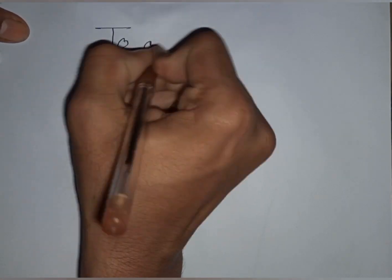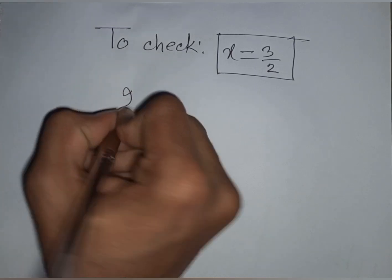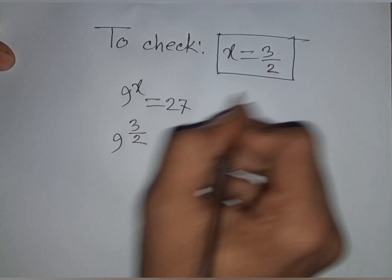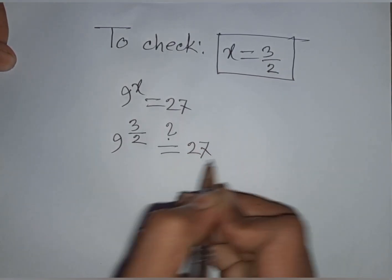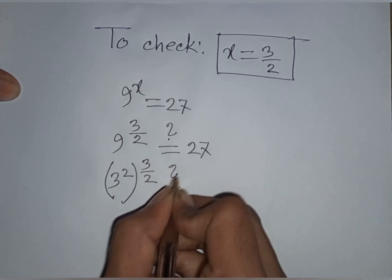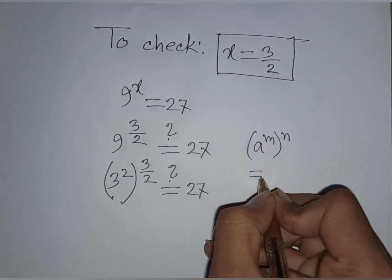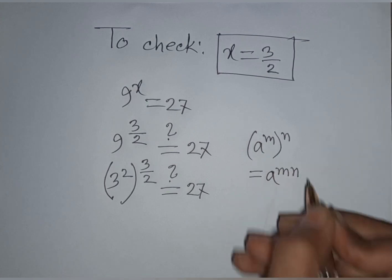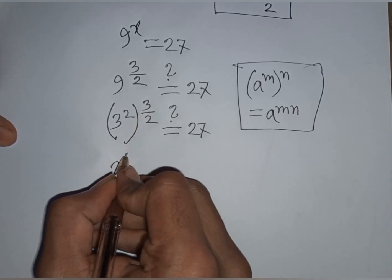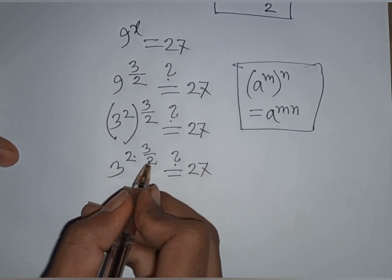To check: for x equal to 3 by 2, our equation is 9 power x equals 27. So 9 power 3 by 2 equals 27. Now 9 can be written as 3 power 2, so we have 3 power 2, bracket power 3 by 2. Applying the exponential rule, this gives 3 power 2 times 3 by 2. We see this 2 and this 2 cancel.